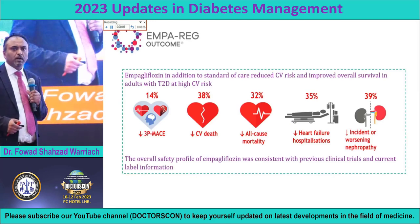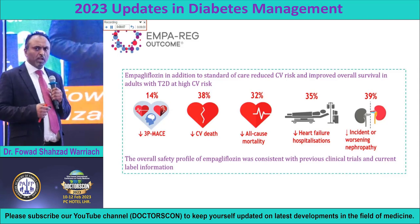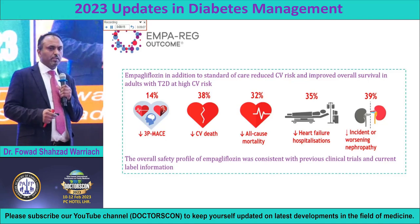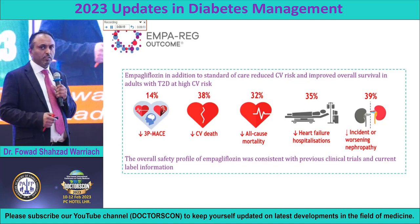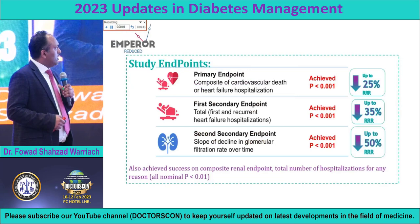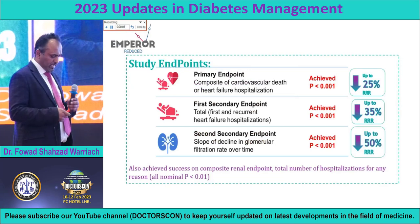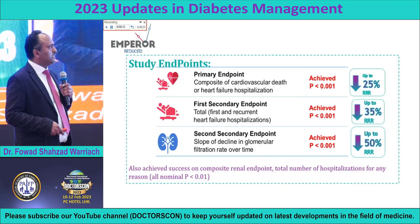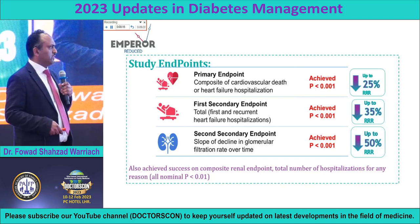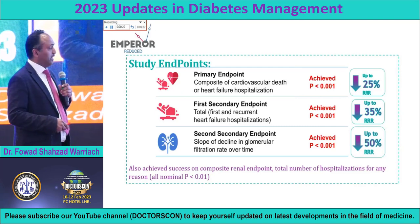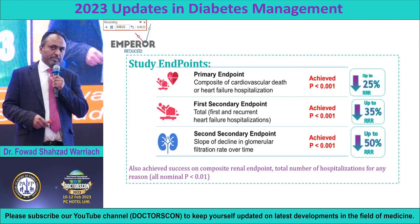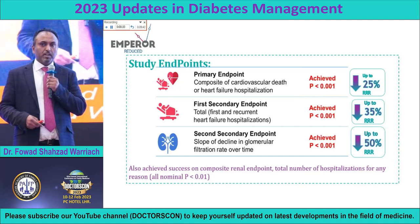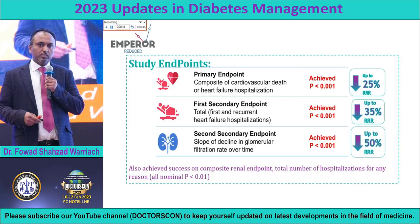Empagliflozin — these are the different studies showing why it is helpful. In almost all studies, Empagliflozin was outstanding: minimum heart failure, less hospitalizations, minimum cardiovascular death in those patients. Empagliflozin reduced the primary endpoint for hospitalization by 25%, secondary risk reduction by 35%, and 50% risk reduction for kidney patients. Which drug? Empagliflozin. Which class? SGLT2 inhibitor — the drug which offers two benefits: drop the weight at least to some extent, and also drop the sugar.